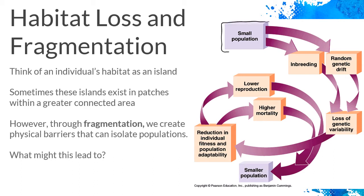A small population is more vulnerable to random genetic drift. For example, if a fire randomly takes out some proportion of a small population, you're more likely to lose large amounts of genetic diversity than you would be in a large connected population where the same number of individuals are removed. So random genetic drift is more extreme and more likely to happen in small populations.